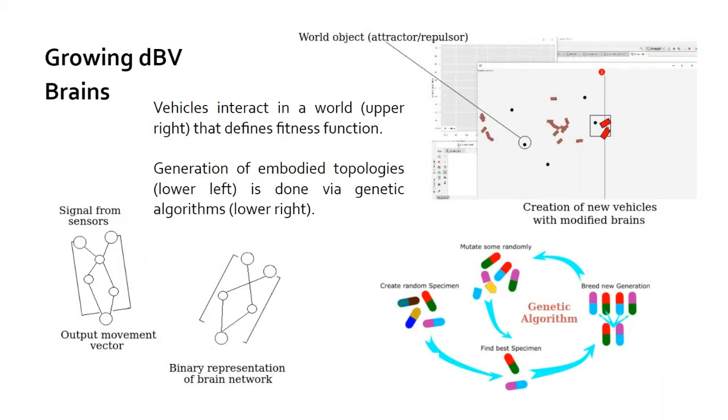We can grow DBV brains in two ways. The first, of course, is this genetic algorithms approach. In this slide, the vehicle interacts in a world. On the upper right, you can see the screenshot that defines the fitness function. As these agents move around the world, their fitness changes, and that tells the agent whether it's doing well or not. We generate these embodied topologies. The agents regenerate and have offspring with different topologies and different shapes depending on how the matrix is permutated. We get a lot of samples of different topologies that we might use in the natural world here, in our environment. Then the genetic algorithm takes the behavioral feedback in terms of the fitness function, the different brains generated through evolutionary means, evaluates them, and creates new versions of DBVs that we can use in an environment.